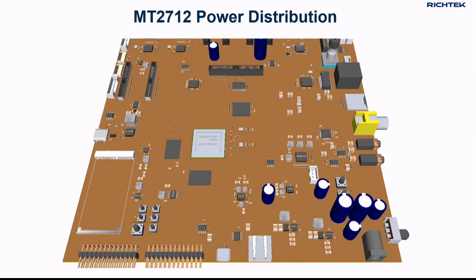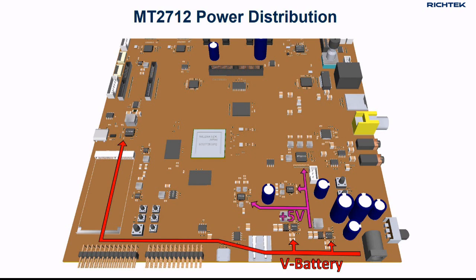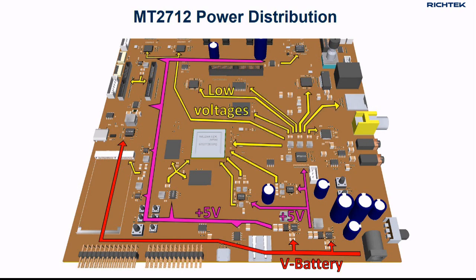The MT2712 infotainment system uses the following power distribution scheme. The battery voltage is sent to the high voltage pre-converters. These buck converters then step down the battery voltage to 5 volts. This 5 volts is then sent to the secondary converters that produce the low voltage rails for the MT2712 and other devices on the board.